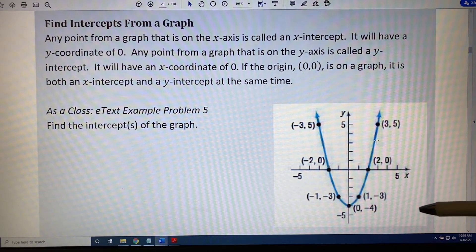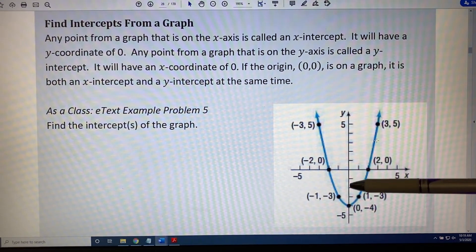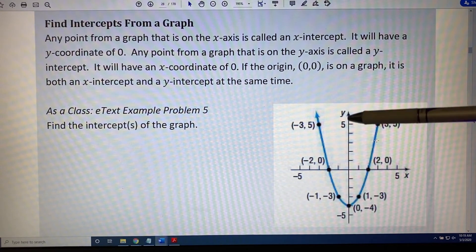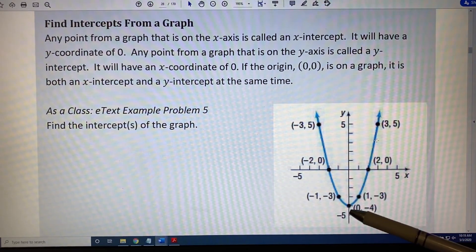The y-intercept is found by looking for where your curve has a point on the y-axis, which is this point right here, (0, -4). Notice that all y-intercepts have an x-coordinate of 0.